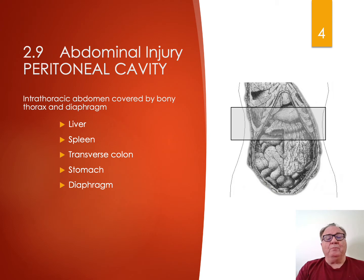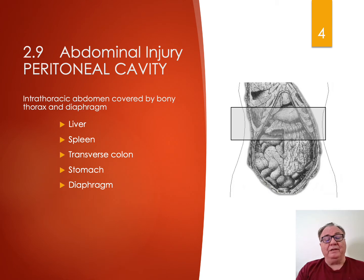The anatomy is very important in abdominal injury. The signs of pain and tenderness are associated with which organ is injured, and this depends on the location. The abdomen is divided into a peritoneal cavity and retroperitoneum. The retroperitoneum we'll discuss later. The peritoneal cavity is divided into different sectors.